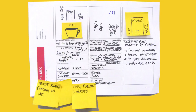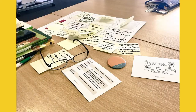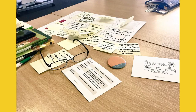The method centres on using this simple worksheet. On it, characteristics from a pleasurable service are ripped and mixed with something which is currently causing you or your users pain, to create ideas for new services. To use the method, the only materials needed are post-its, pens, worksheet templates and pleasure cards.